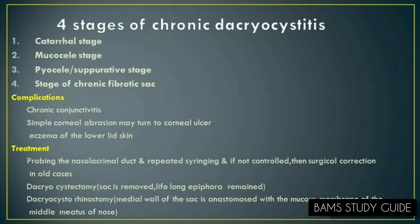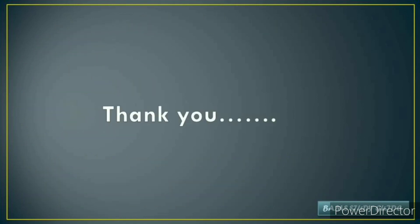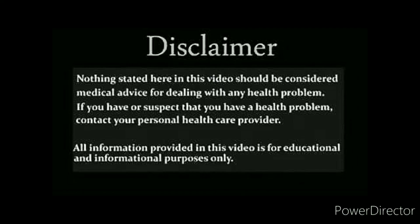Chronic Dacryocystitis can lead to chronic conjunctivitis, corneal abrasion progressing to corneal ulcer, eczema of the lower lid skin, etc. Treatment includes probing of the nasolacrimal duct and repeated syringing; if not controlled, surgical correction is required, including Dacryocystectomy and Dacryocystorhinostomy. Thank you for watching and see you in the next video.